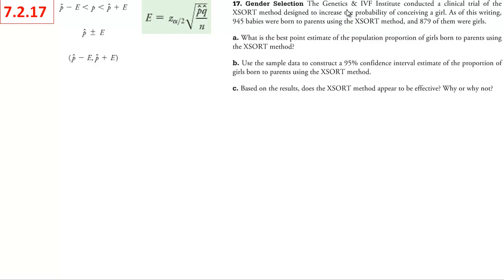We've got this genetics company that seems to think that they can increase the probability of having a girl if you use this X-SORT method. As of this writing, we will say there were 945 babies born to parents using this X-SORT method. Of those, 879 were girls, which seems pretty high when you think about it. When just by normal birthing it should be 50-50, it should be half girls and half boys.